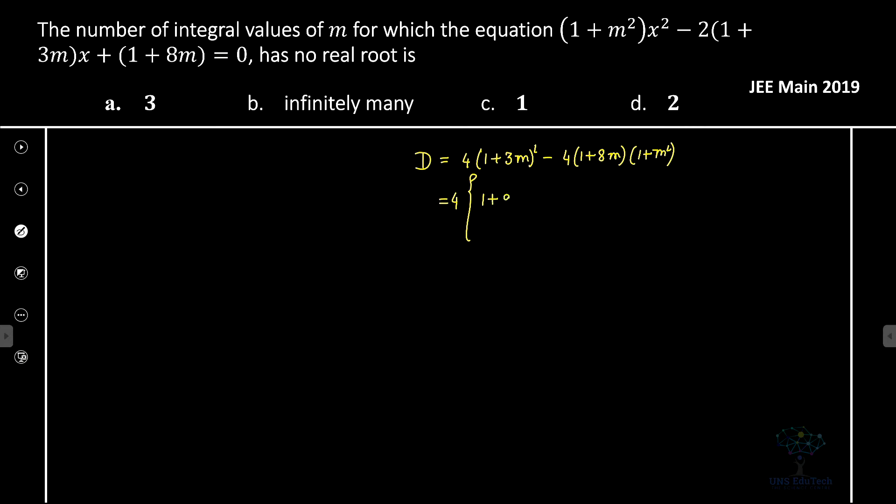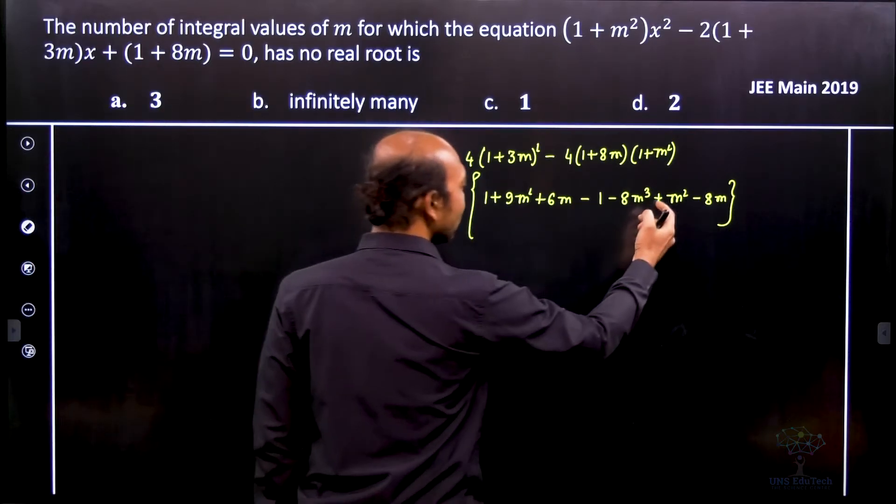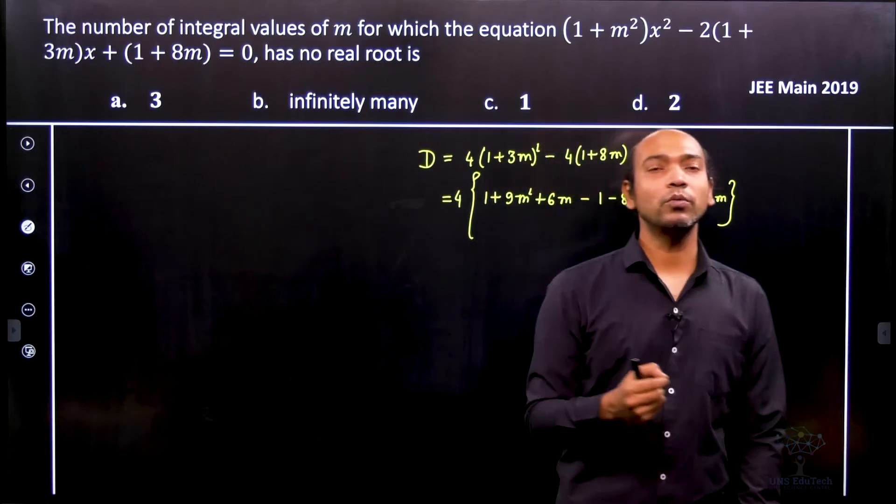So here we take common 4 and we expand it. Therefore it is (1 + 9m² + 6m) minus (1 + 8m)(m² + 1). This sign will be replaced by minus 1, so we obtain this product.